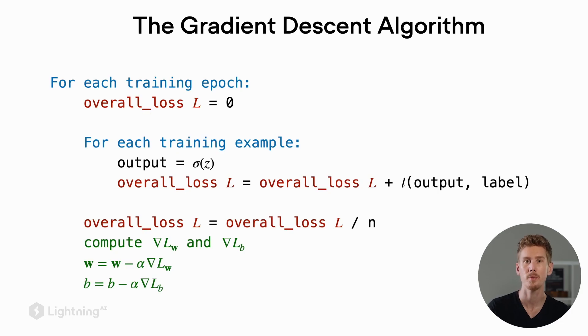We can then use this loss to compute the gradient of this loss with respect to the model parameters w and b. And once we have these gradients, we use these gradients to update the model parameters.